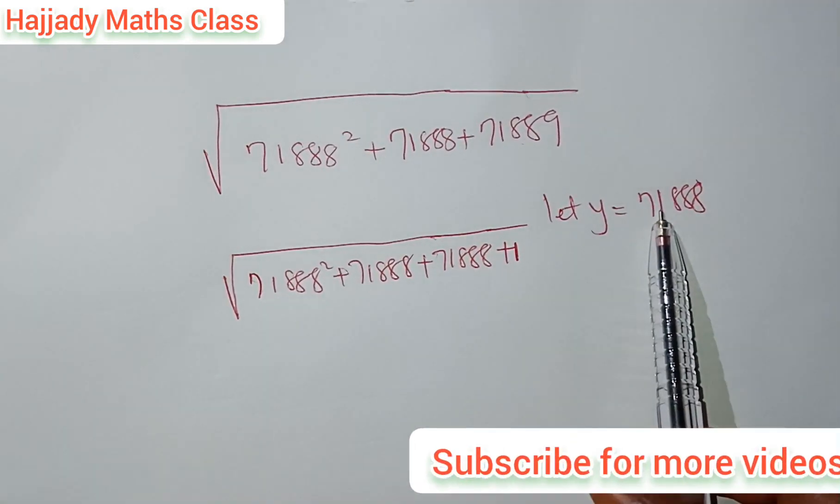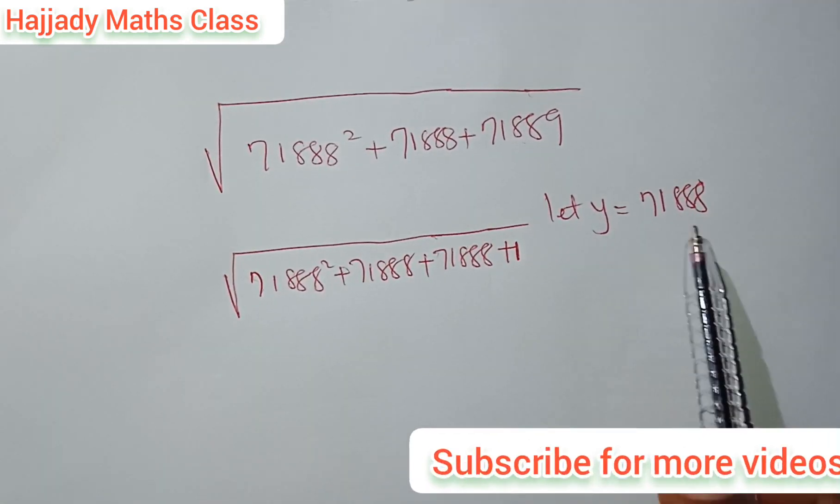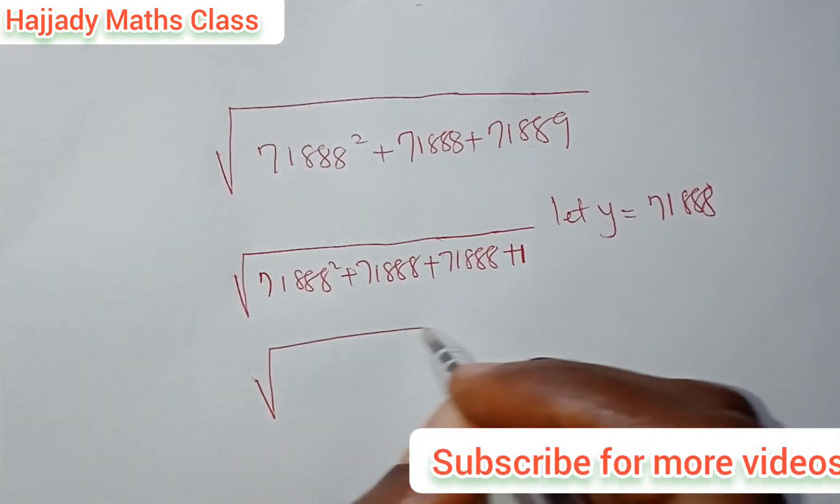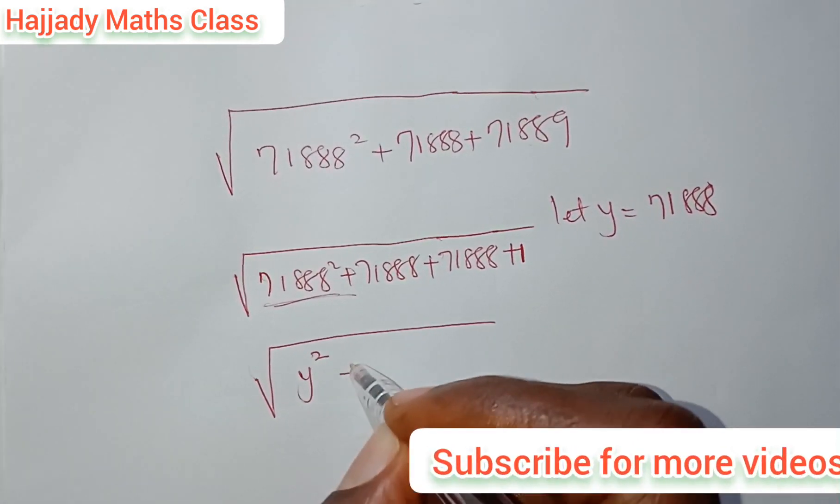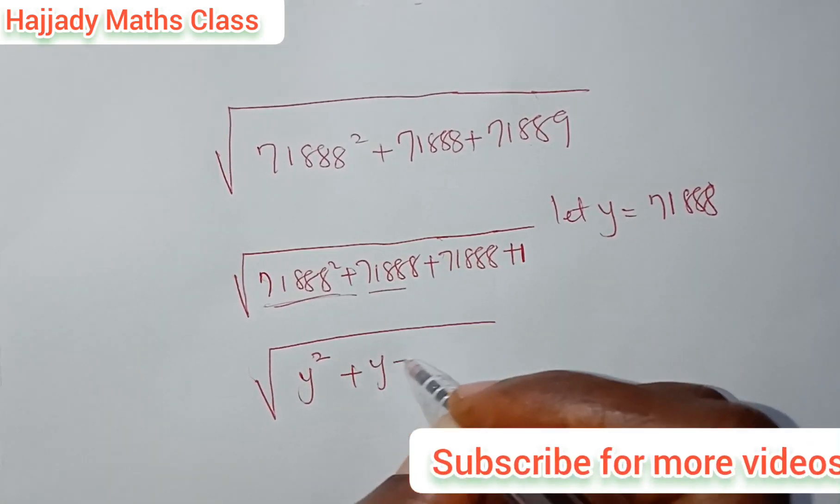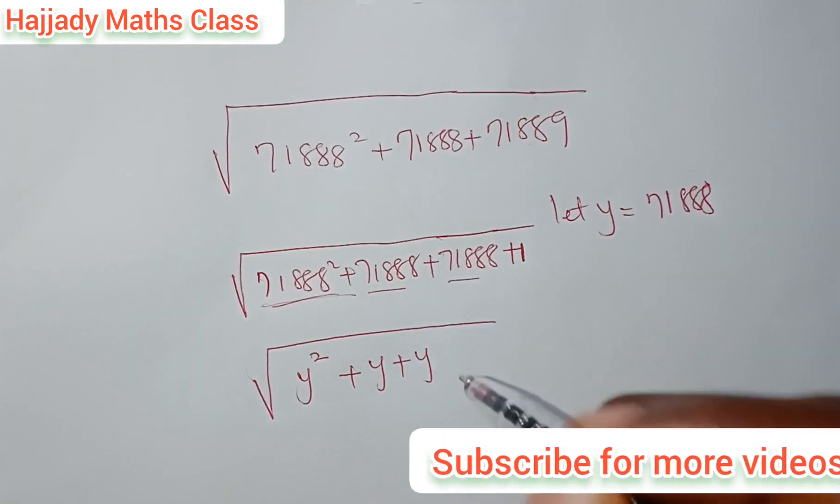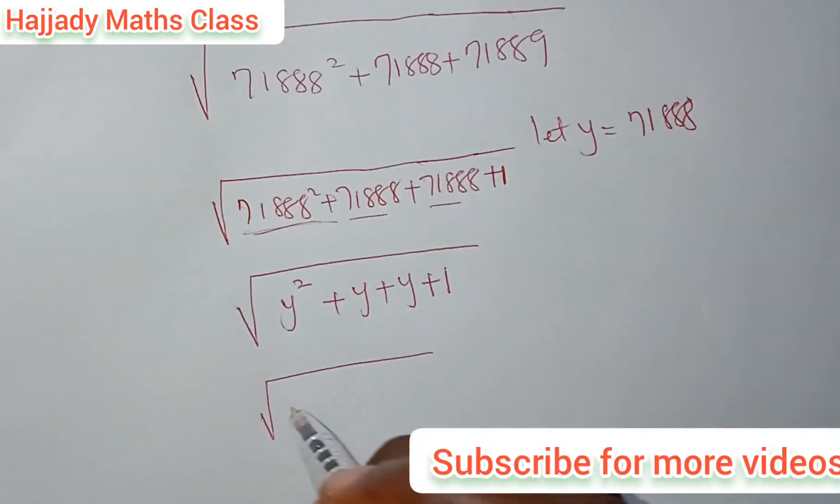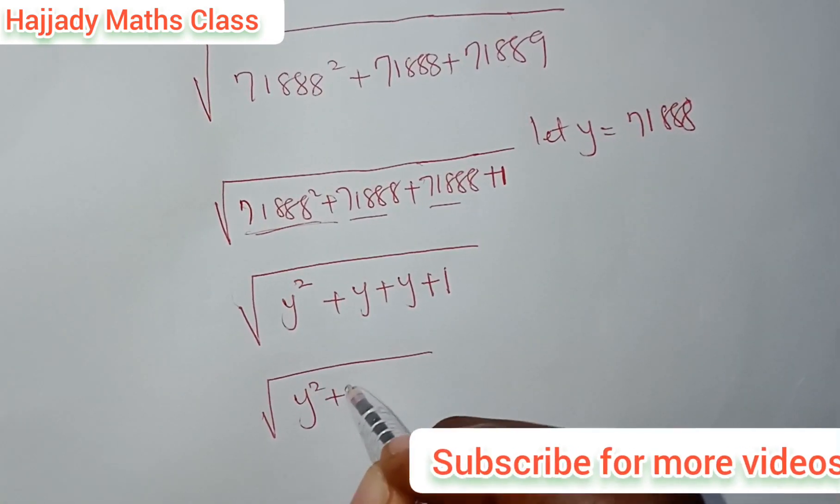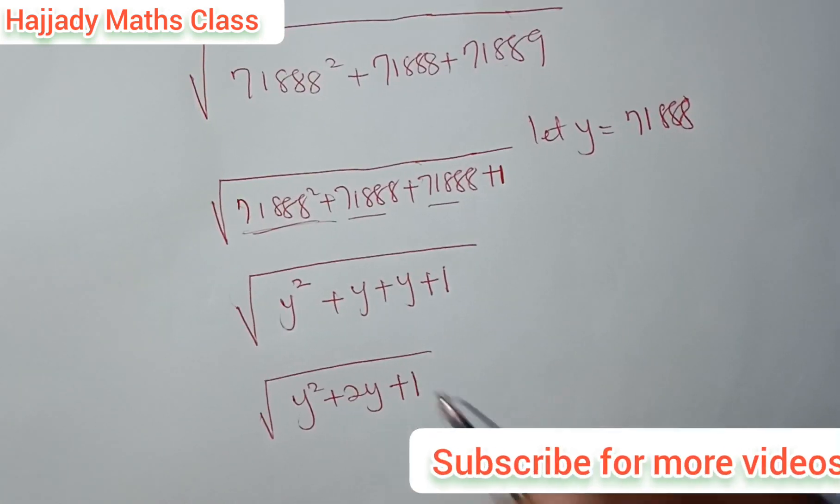So now, let our y be equal to 71888. So with this, we can have y raised to the power 2 here. Here we can have y. Here we can have y also plus 1. So here we have y² plus 2y plus 1.